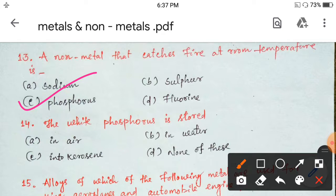Next. The white phosphorus is stored in air, in water, in kerosene, none of this. Since phosphorus catches fire at room temperature, how is it stored? It is stored in kerosene. Option C is the right answer.